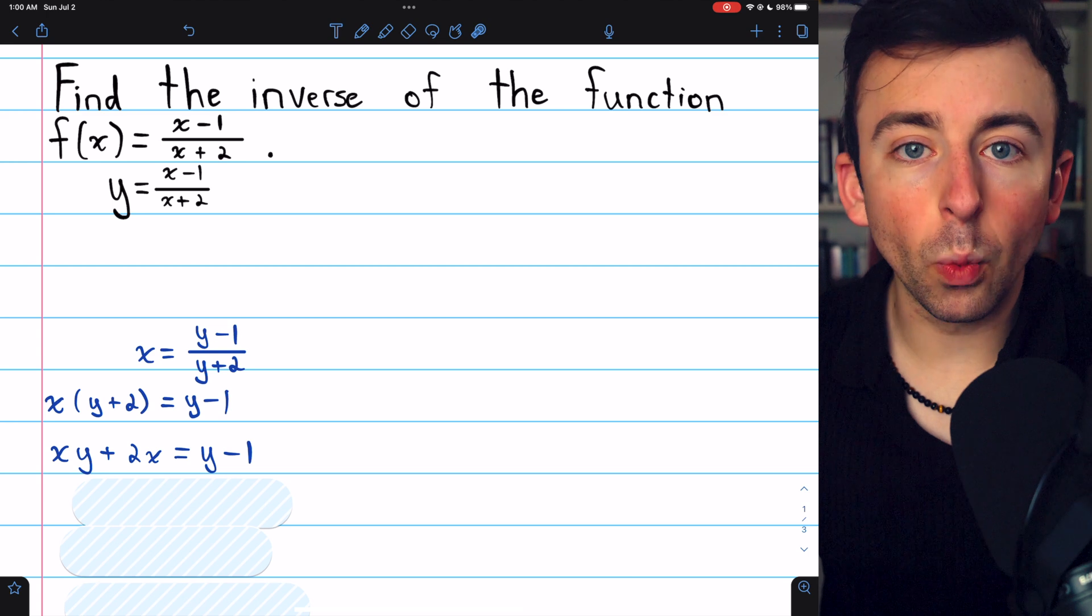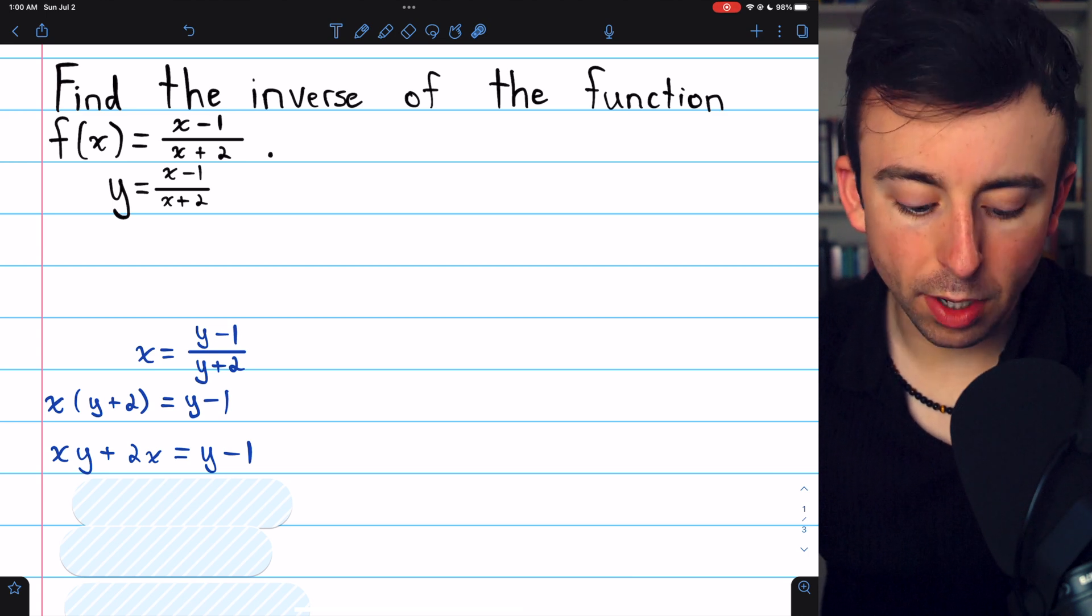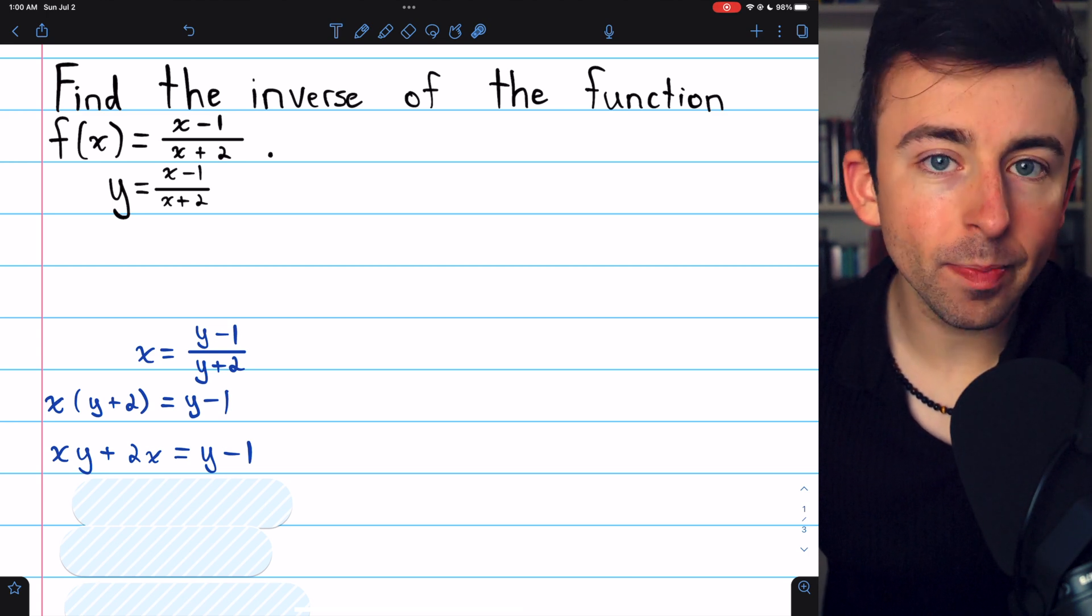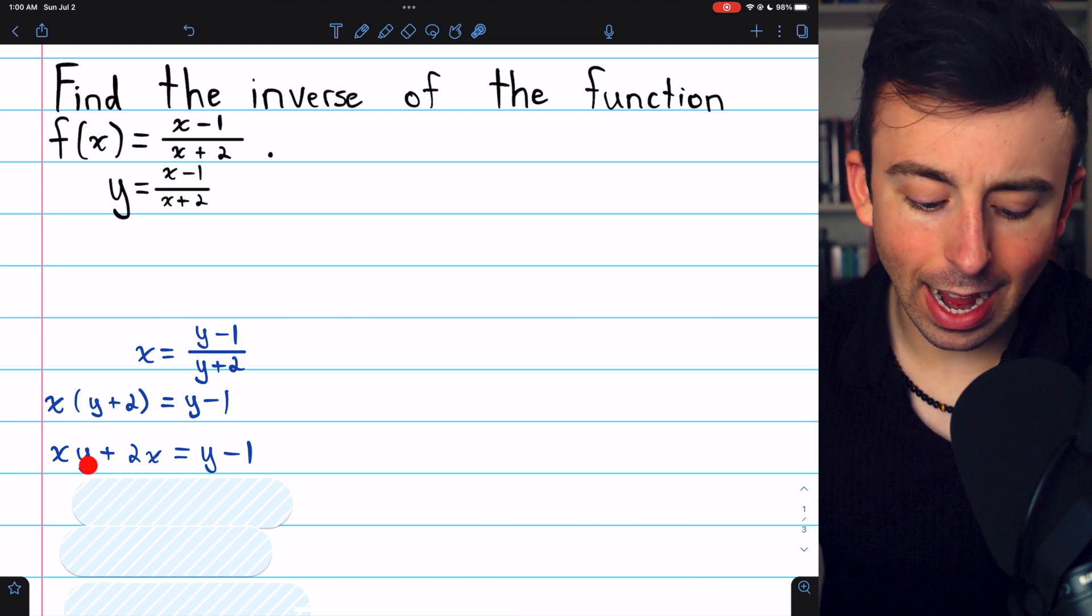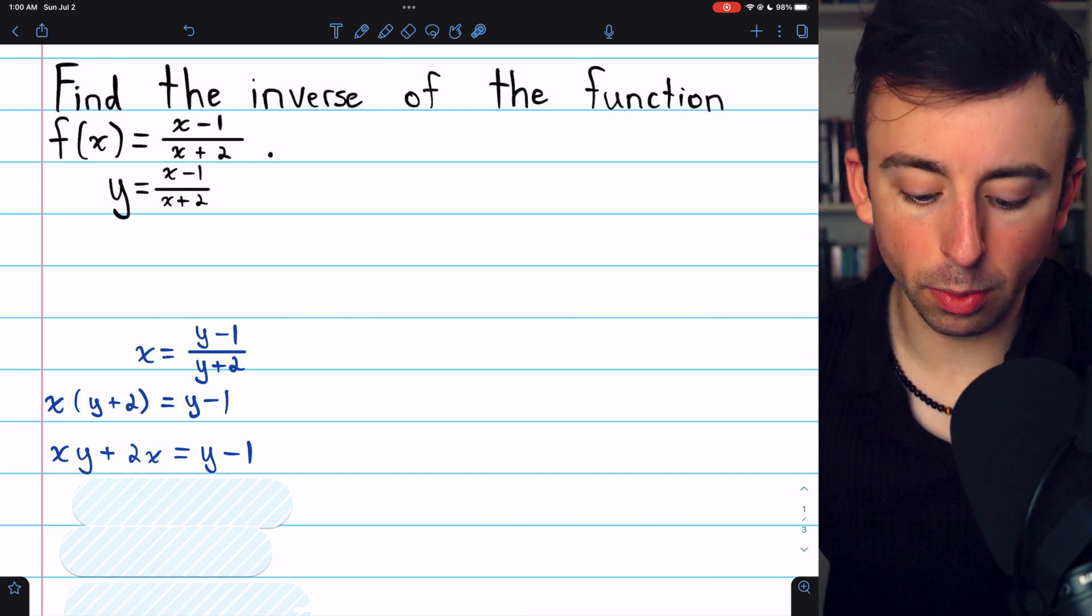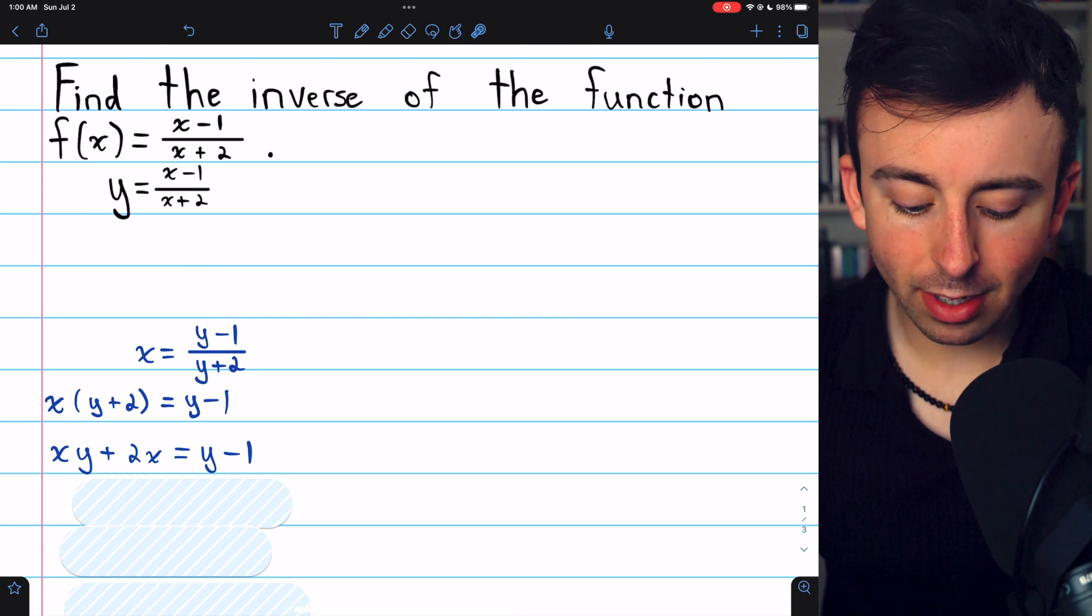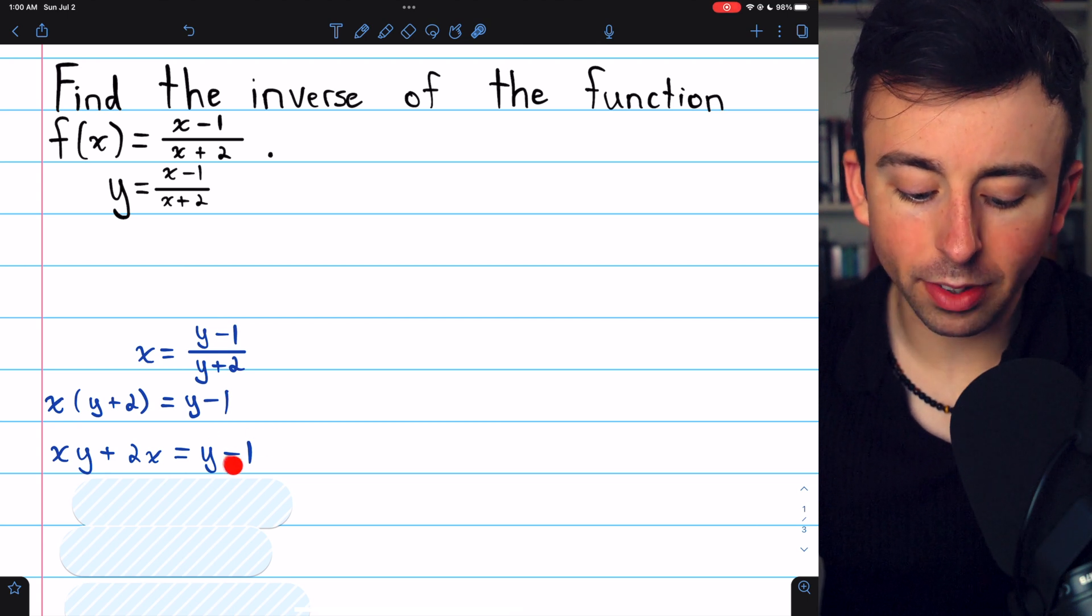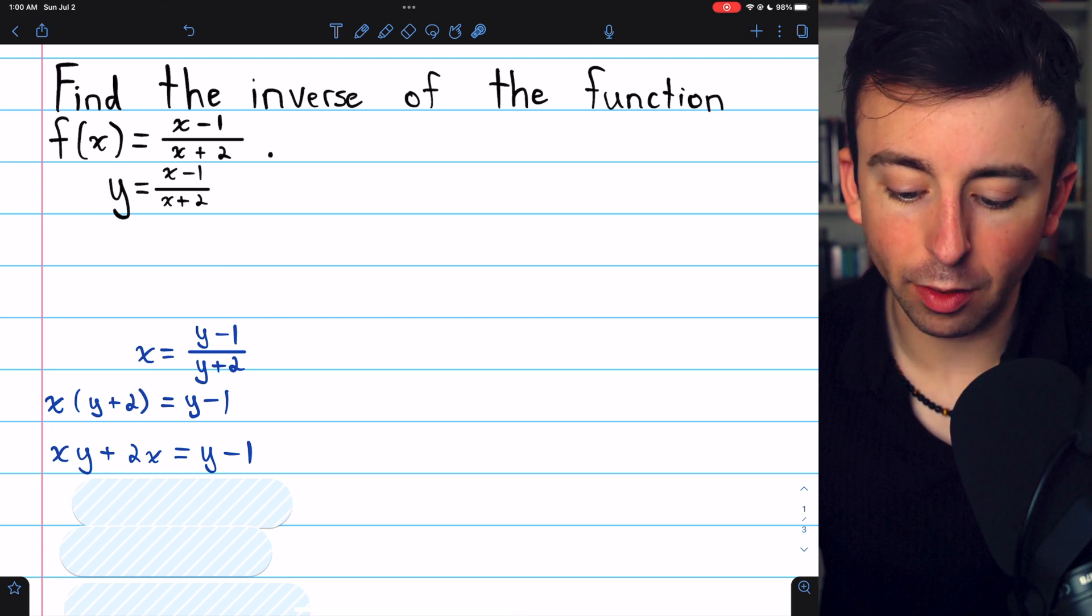Now we need to get all the y's on one side, we could bring them all to the left or to the right, doesn't matter. Let's subtract xy from both sides. So we'll move all the y's to the right. And in the same step, let's add one to both sides to get rid of that negative one.